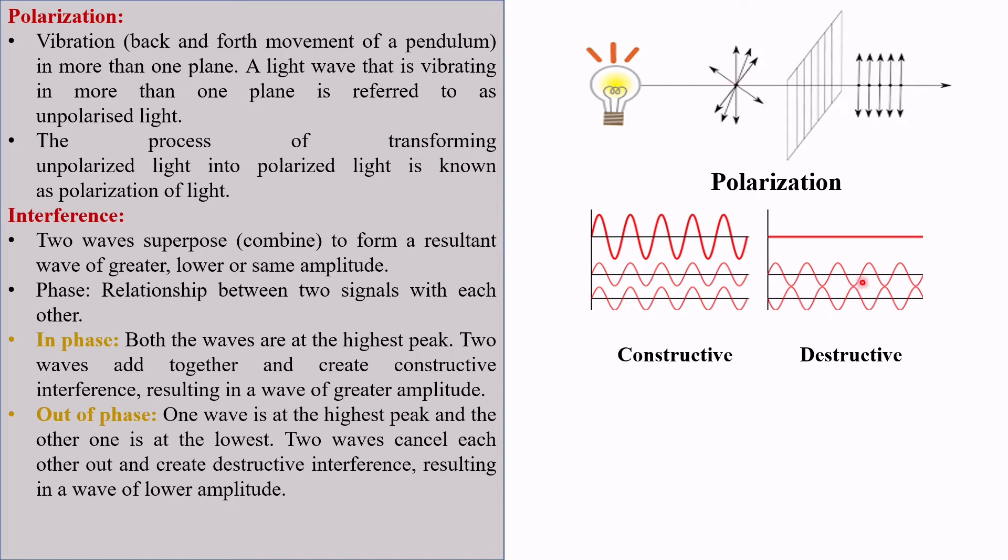Here we can see this wave is at its highest peak, and this wave is at its lowest peak. So if we add them together, they will cancel each other out and the resulting wave will have a much lower amplitude.